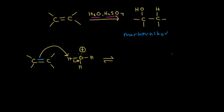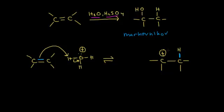Drawing an equilibrium arrow here — let's say the proton added to the carbon on the right. The blue electrons on the left form the new bond. That means I took a bond away from the carbon on the left, which used to have four bonds. Now it has only three, so it ends up with a +1 formal charge — we have a carbocation. Taking a proton away from H3O+ leaves us H2O.